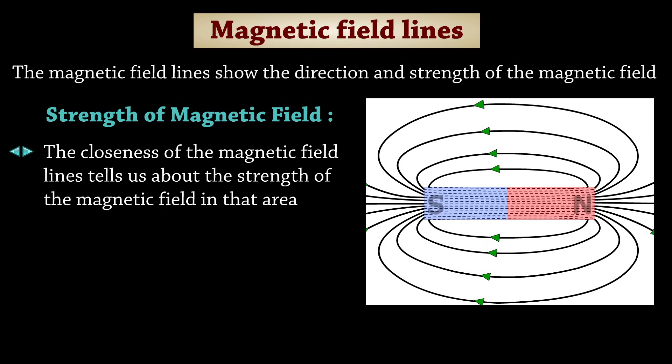The closeness of the magnetic field lines tells us about the strength of the magnetic field in that area. The more closely packed lines indicate a stronger magnetic field.